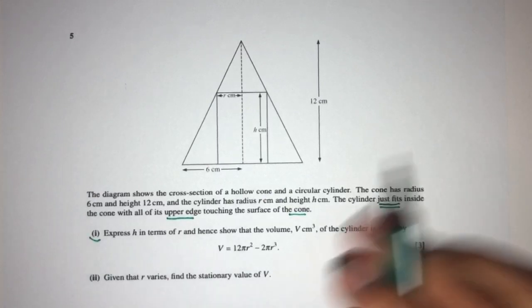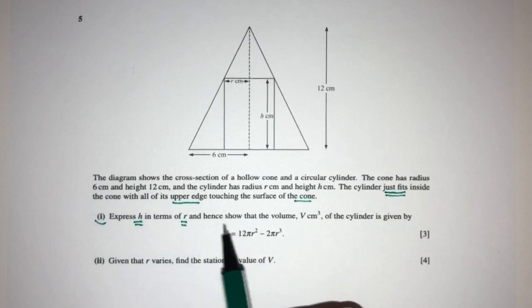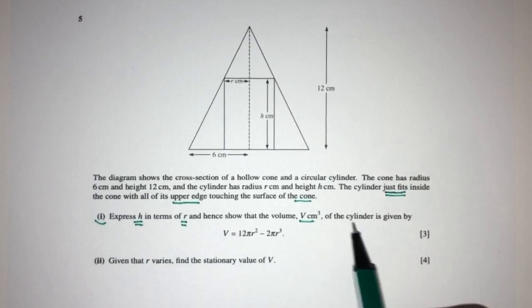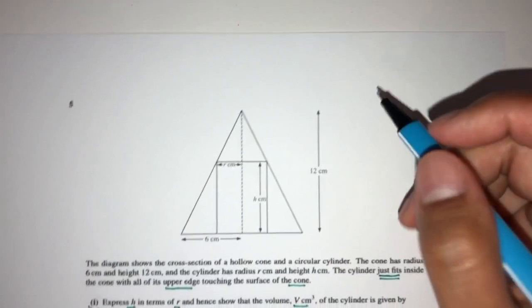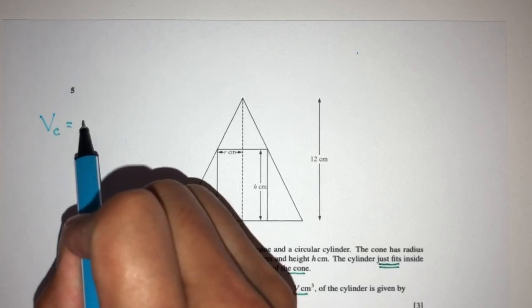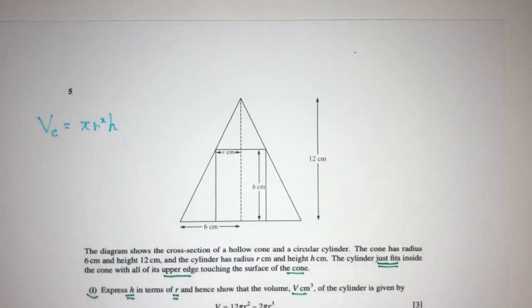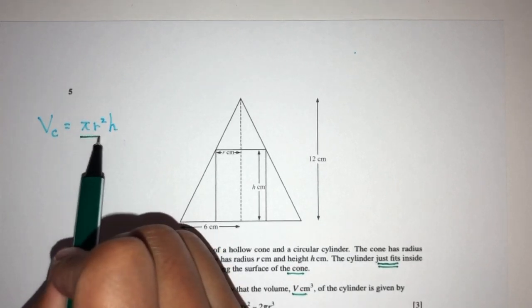Part one: we have to express H in terms of R and hence show that the volume of the cylinder is given by this. Now the first thing we can do is how do you find the volume of a cylinder? Volume of a cylinder is equal to π R² H.